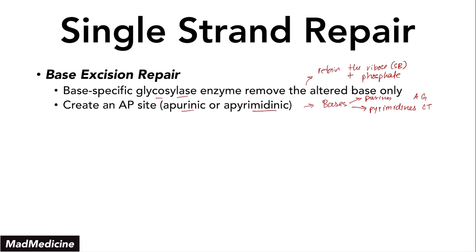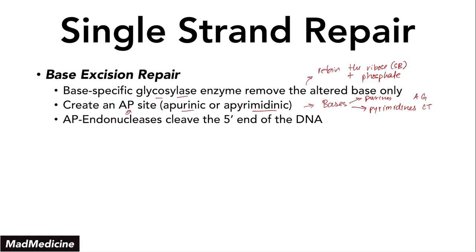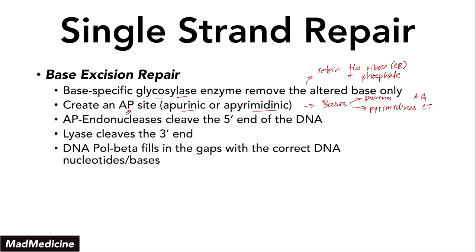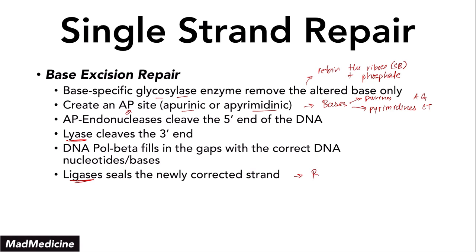AP-specific endonucleases — endonucleases that can only recognize the AP site — will come in and cleave the 5' end of the DNA, and then cleave the 3' end with ligase. Then DNA polymerase beta, a specific type of DNA polymerase in eukaryotic cells, fills in the gaps with the correct DNA nucleotides and bases. Then ligase seals the strand, and we go back to business as usual.